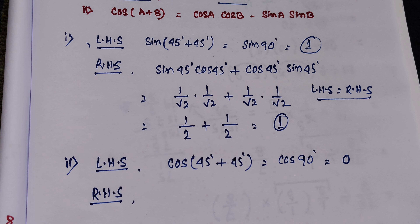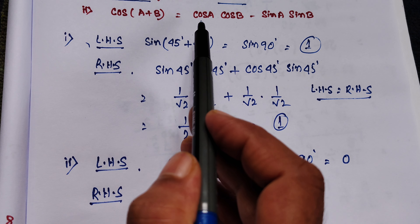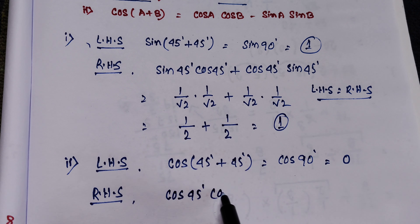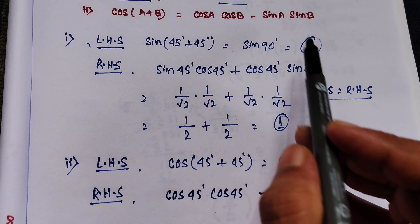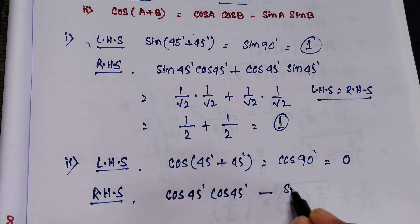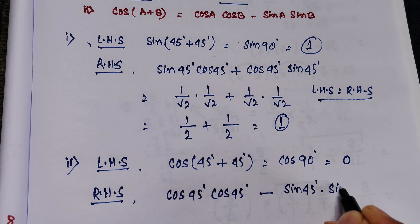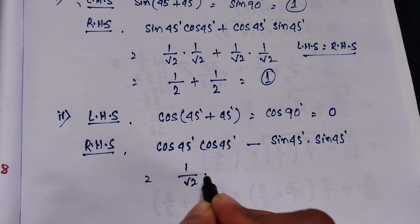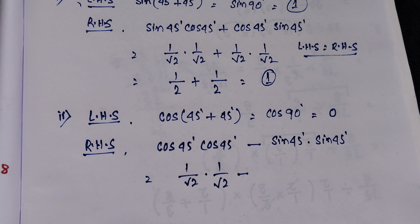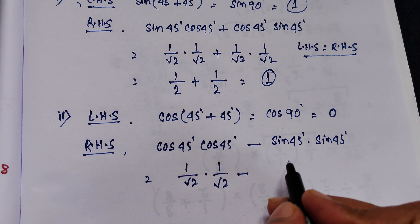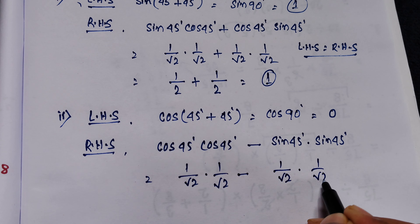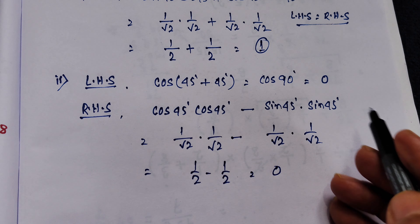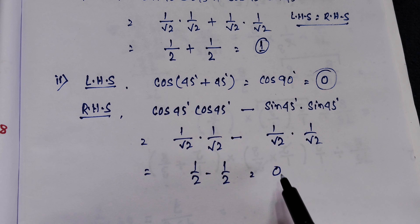With a equal to 45 and b equal to 45, the right hand side is cos 45 into cos 45 minus sin 45 into sin 45. Cos 45 equals 1 by root 2 and sin 45 equals 1 by root 2. So this equals 1 by root 2 into 1 by root 2 minus 1 by root 2 into 1 by root 2, which is half minus half equal to 0. So left hand side is 0 and right hand side is 0.